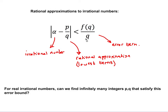This is the notation we'll be using. We use alpha to be any irrational number. P and q are the rational approximation given in their lowest terms — a simplified fraction. We're saying the difference between the actual number and the rational approximation must be smaller than some error bound, and we want to minimize that error to get a closer approximation. The question is: can we find infinitely many p's and q's satisfying our error bounds?